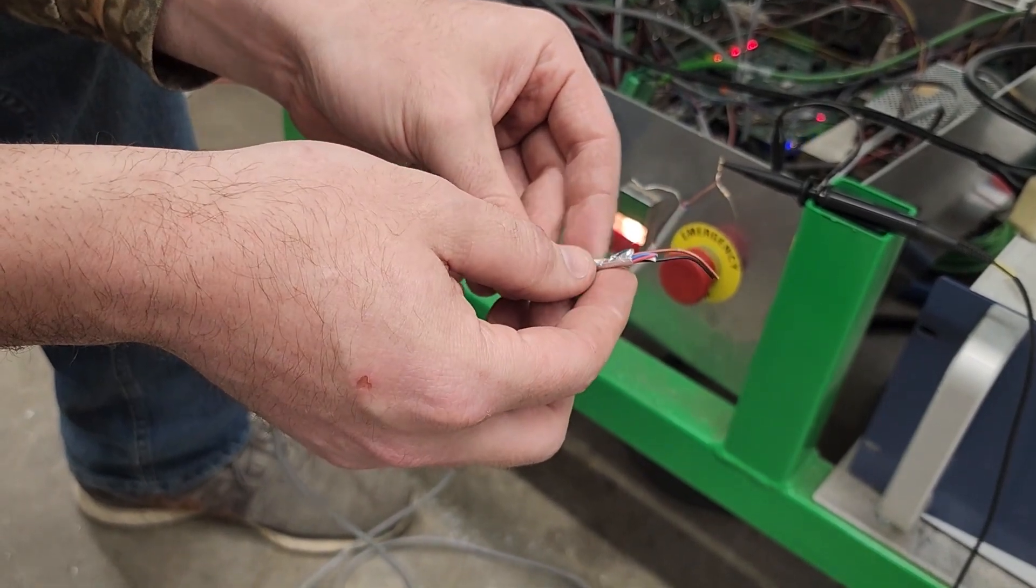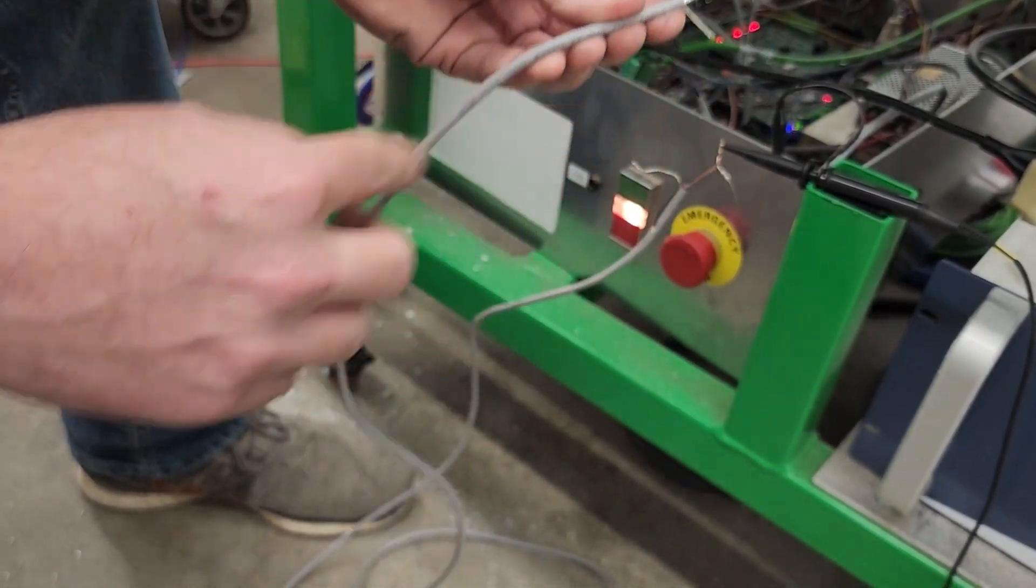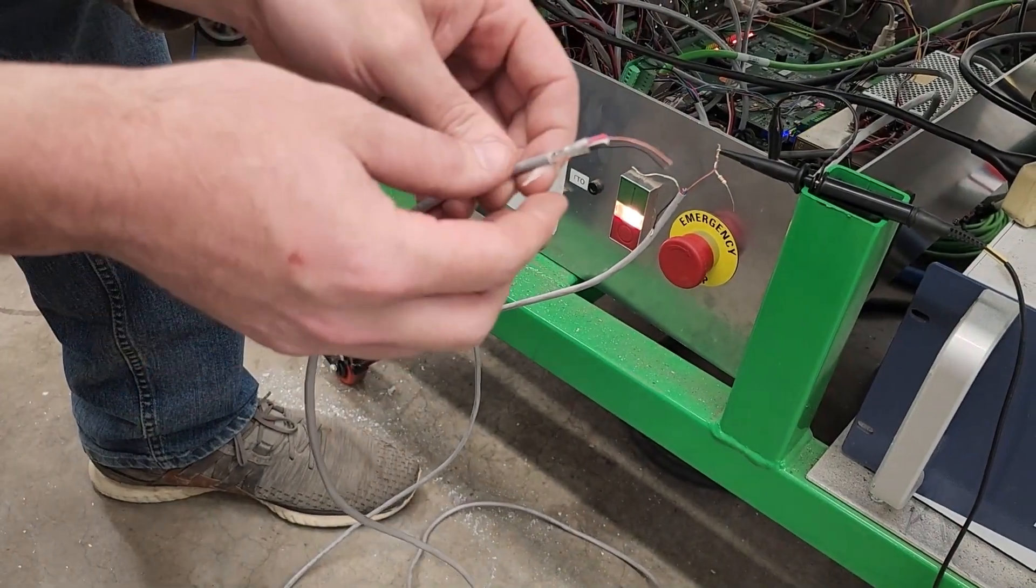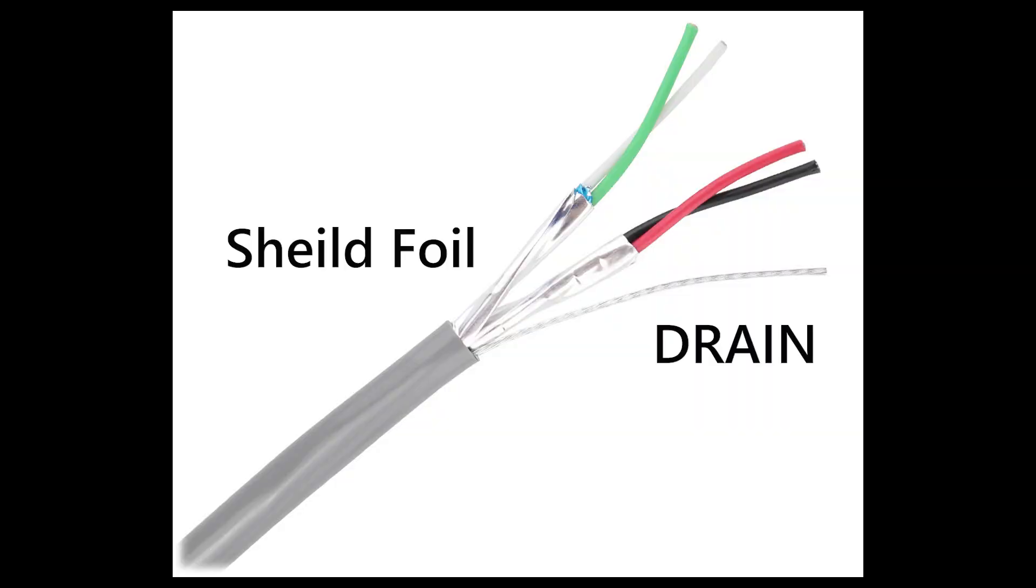The foil is wrapped around the wire inside of the cable, and that runs along the length of the cable. When we're talking about grounding the cable, or the shield, or the drain...